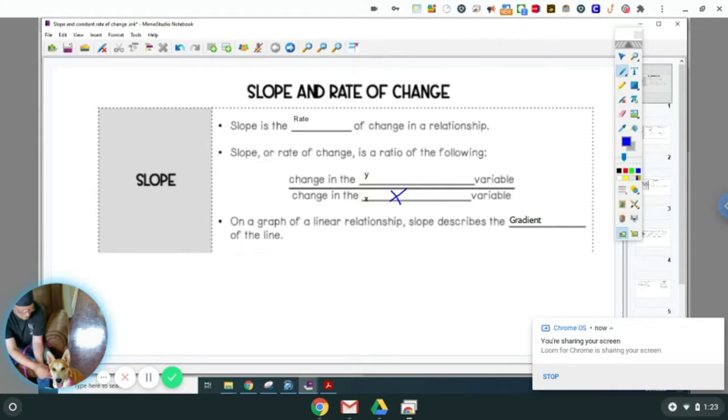On a graph of a linear relationship, slope describes the gradient of the line. Basically means how steep the line is, is the gradient.